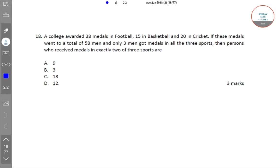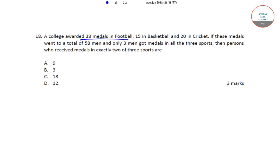Hello students, welcome to Saurav Sir's Classes. The question is: a college awarded 38 medals in football, 15 in basketball and 20 in cricket. If these medals went to a total of 58 men and only 3 men got medals in all the 3 sports, then persons who received medals in exactly 2 of the 3 sports are.